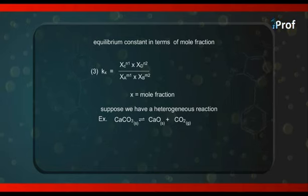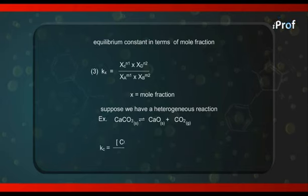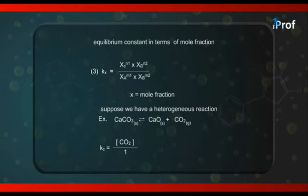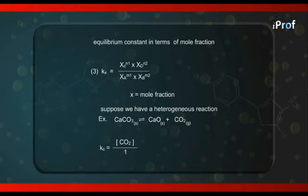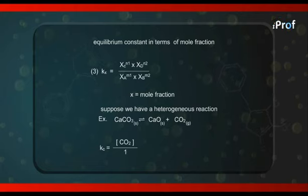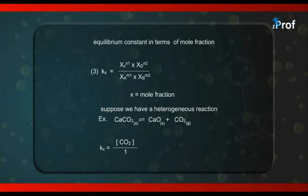Kc would be equal to the active mass of the product, CO2, raised to the power one. You may wonder why terms for CaCO3 and CaO are missing. As already explained, for pure solids and pure liquids, active masses are taken to be one for convenience because they remain constant during the course of reaction. So for both solids, active mass becomes unity, and Kc depends only on the concentration of CO2.